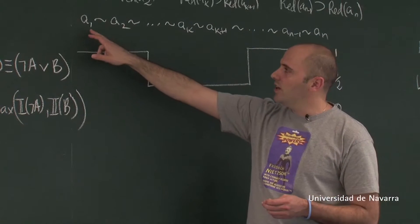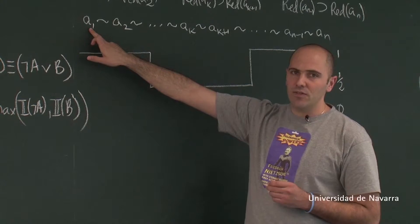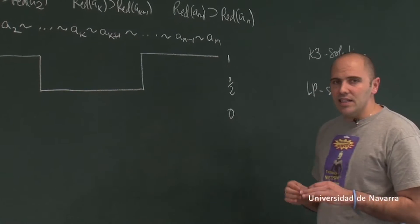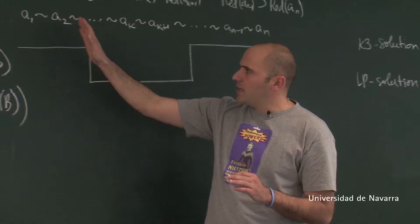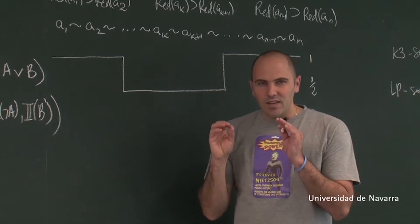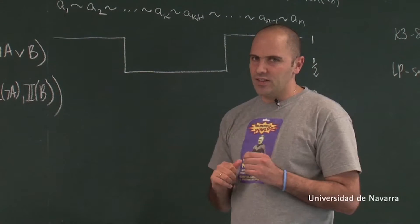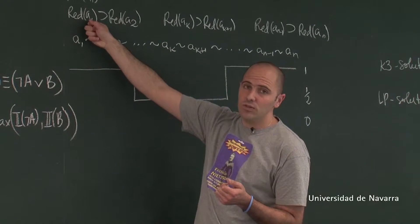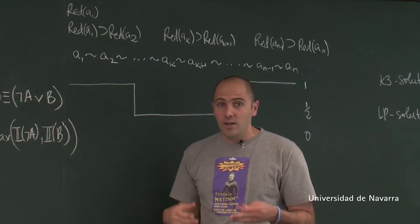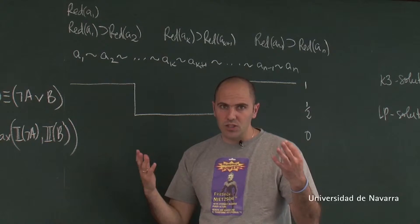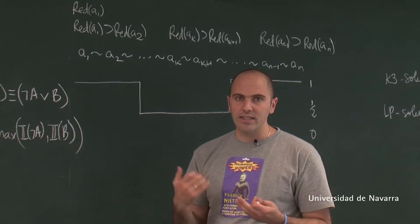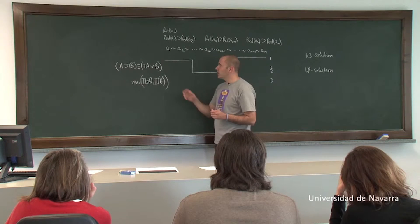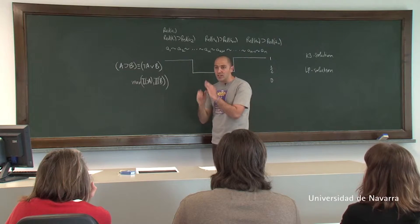Just to remind you: the first element of the series is clearly red, the last element is clearly not red, but each element in the series is very similar to its neighbor. So it seems that all the conditionals telling you that if this one is red the next one is red all look to be true, because otherwise it seems that we are making a very subtle distinction between elements that are very similar in color.